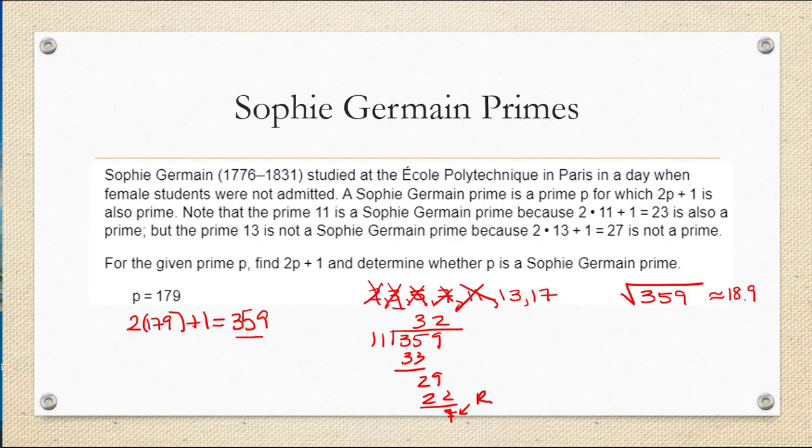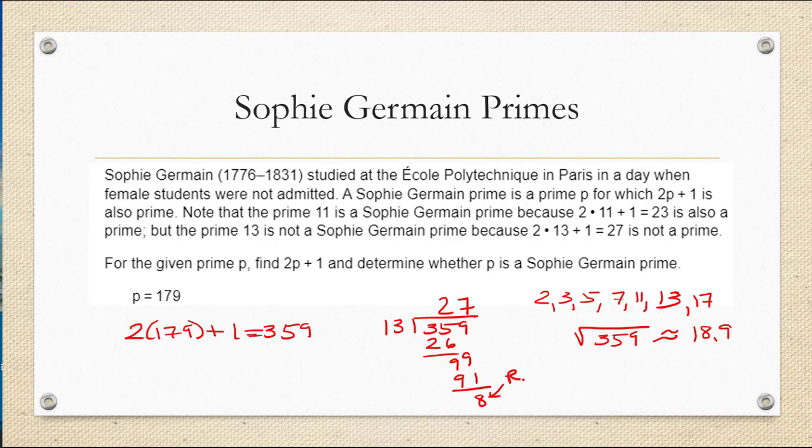Now let's check 13. 13 goes into 359 27 times with a remainder of 8. So it is not a factor of 359. That just leaves 17. This quotient also has a remainder. So 17 also is not a factor of 359.